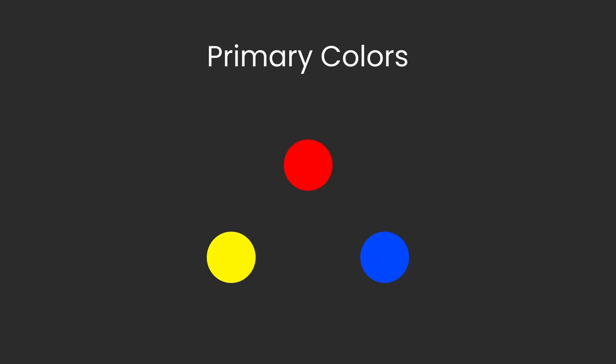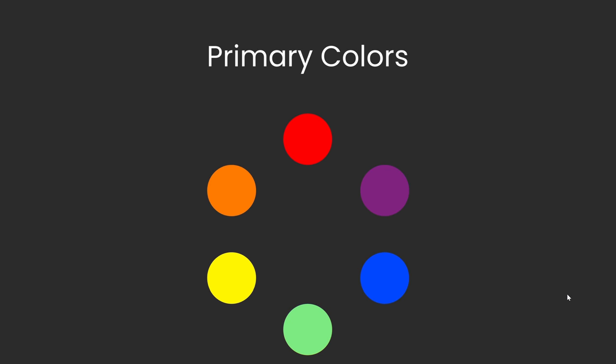How do we get other colors? We can mix yellow and red, for example, and that is going to give us orange. We can apply the same to the other ones to get green and purple. These are called secondary colors.